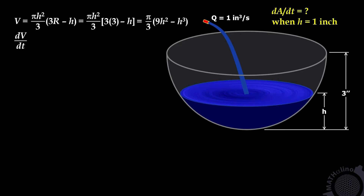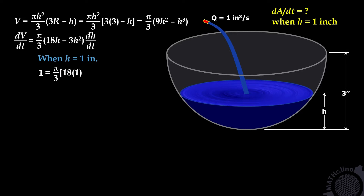Distribute h squared inside the bracket: pi over 3 times (9h squared minus h cubed). Differentiate both sides with respect to time. We have pi over 3 times (18h minus 3h squared) times dH/dt. When the depth is 1 inch, dV/dt equals 1, so: 1 equals pi over 3 times (18×1 minus 3×1 squared) times dH/dt. Solving, dH/dt equals 1 over 5pi inch per second.